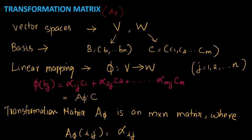The transformation matrix A_phi is an M by N matrix where A_phi(i,j) = alpha_ij. M is the number of basis vectors in W (the dimension of W), and N is the number of basis vectors in V (the dimension of V). So the transformation matrix has dimension M by N, and the alpha values written in matrix form constitute the transformation matrix.